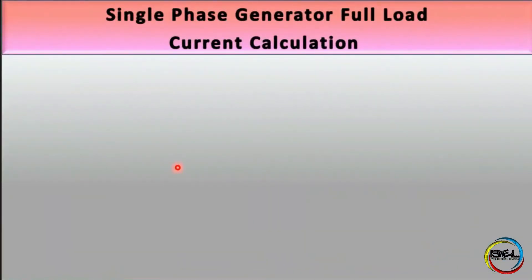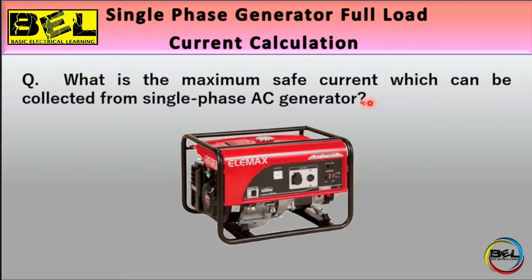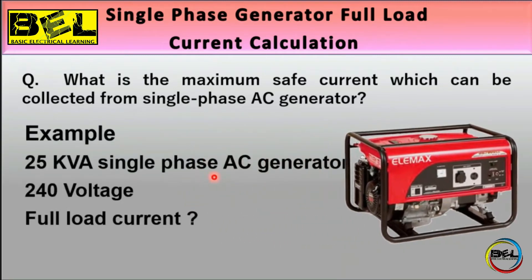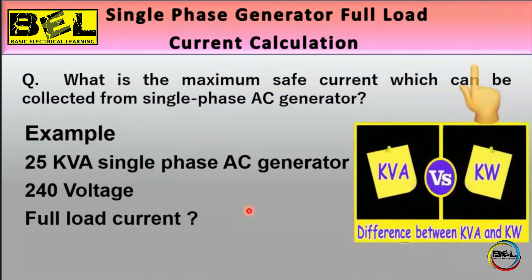The topic is single phase full load current calculation. The question is: what is the maximum safe current that can be drawn from a single phase AC generator? Most home AC generators are rated in kVA — kilovolt-ampere — which is the unit of AC power. There is another unit of AC power, which is watt, and we can look at the difference between kVA and watt.